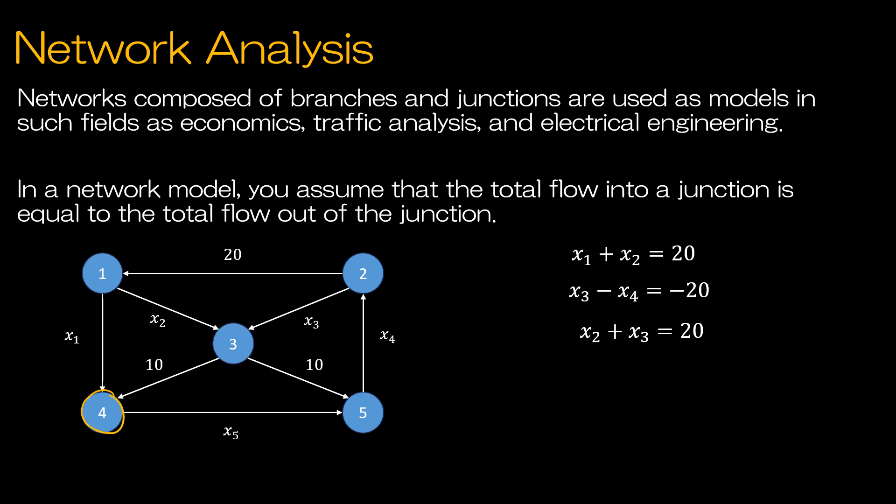For junction 4, x1 and 10 are coming in and x5 is going out. Again, I'll write that as x1 minus x5 equals negative 10 in standard form. Finally, junction 5 has input of 10 and x5 and output of x4. So I'll write that as negative x4 plus x5 equals negative 10. This is the system of equations I will use.